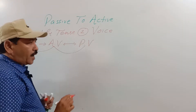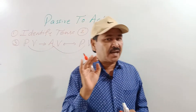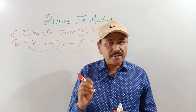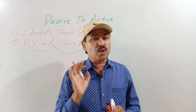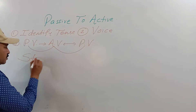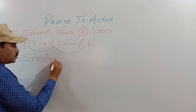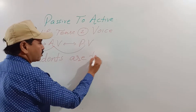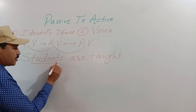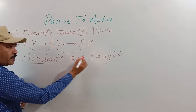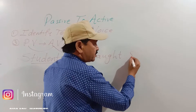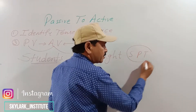अब क्या करना है — आपको जो भी sentence दिया जाएगा, and most importantly in English, many times passive voice is used without a doer. For example, if I say: 'students are taught' — student को पढ़ाया जाता है।